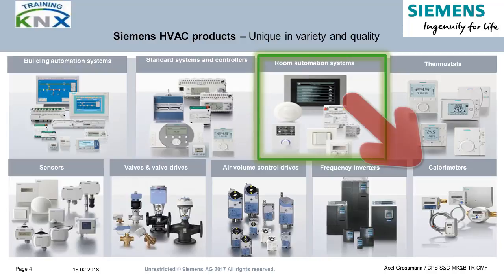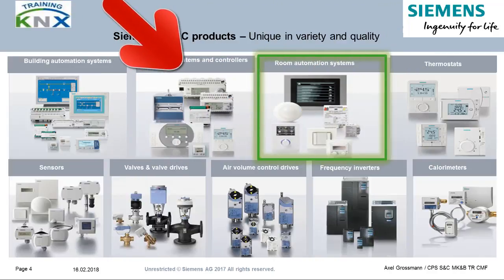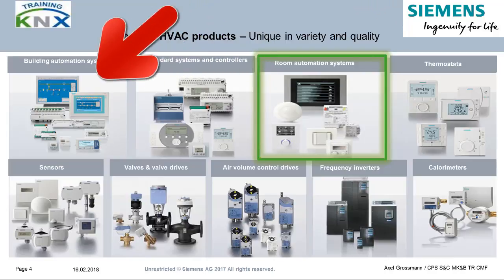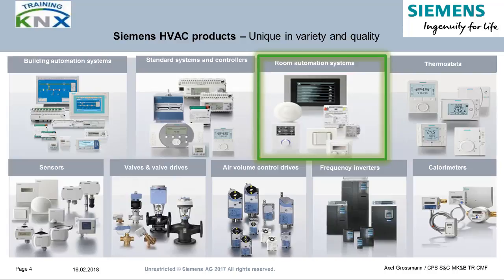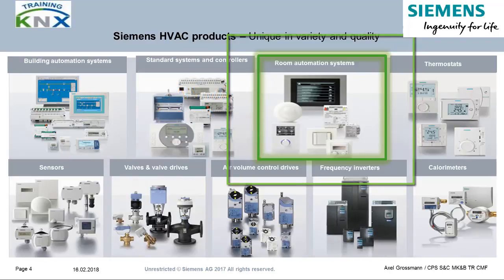The product range extends over consumption counters — for example heat — via valves and valve drives, up to thermostats and controls. The GAMMA building system technology covers especially the sections of lighting and shading with all its facets. The SIGO automation systems with BACnet coupling allow even large-scale systems to be controlled and monitored. In the KNX basic course, you are dealing only with the area outlined in green.